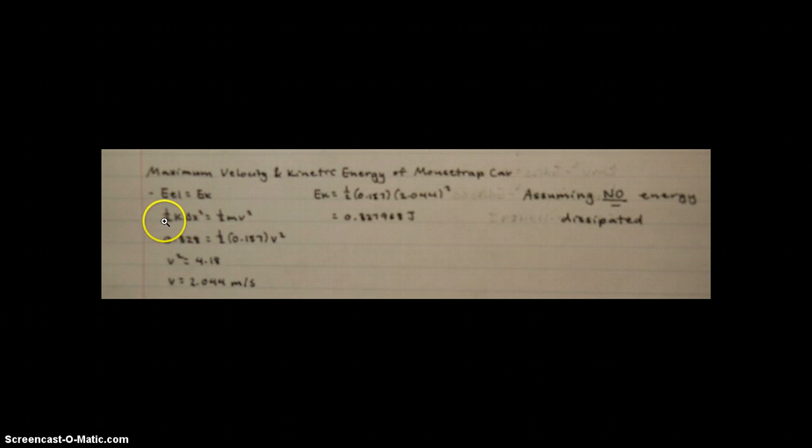We find here that 0.5 k delta x squared equals 0.5 mv squared. We found previously that the maximum elastic energy of the spring is about 0.328 joules. And we set this equal to 0.5m, which is the mass of the car, times v squared. And we solve for v and get that it is about 2.44 meters per second.